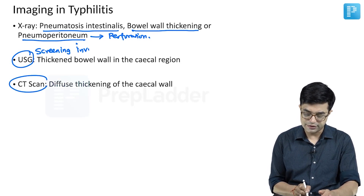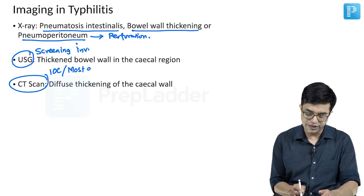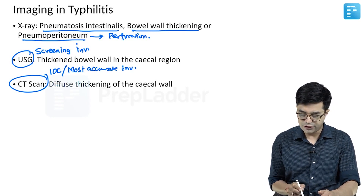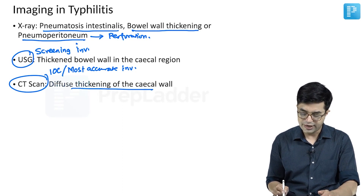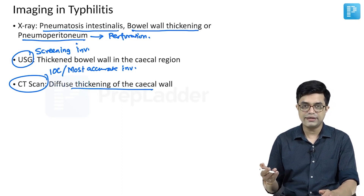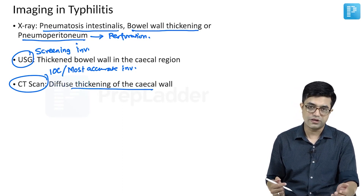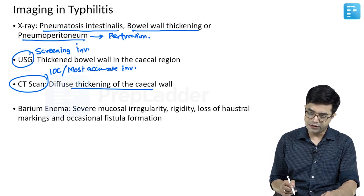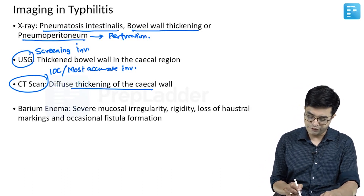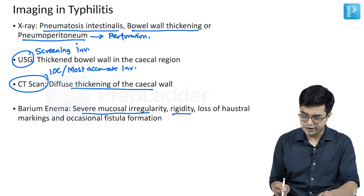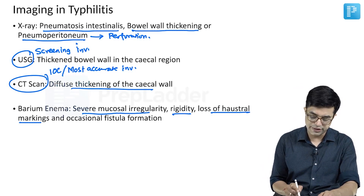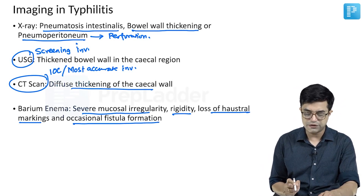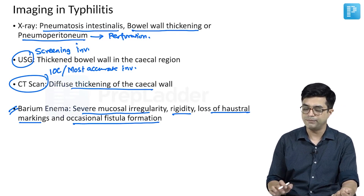CT scan is considered to be the investigation of choice as well as the most accurate investigation in Tiflitis. CT scan will show diffuse thickening of the cecal wall, and contrast CT is usually preferred over non-contrast CT scan. Barium enema will show severe mucosal irregularity, rigidity, loss of haustra markings, and occasional fistula formation, but barium enema these days is not done very frequently.